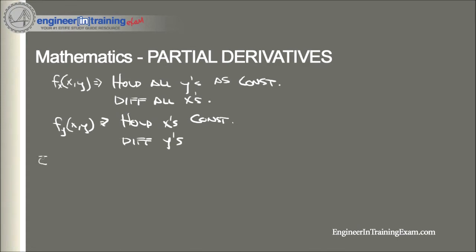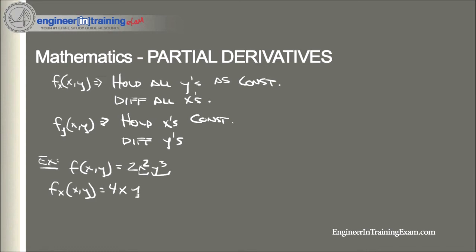Let's illustrate this through an example. Let's find the partial derivatives of the function f(x,y) = 2x²y³. First, let's find the partial derivative with respect to x. We hold y³ constant and differentiate x squared, and we get 4xy³. Now finding the partial derivative with respect to y, we hold x squared constant and differentiate the y function, and we end up getting 6x²y². As you can see, the two partial derivatives are not going to be equal to one another.